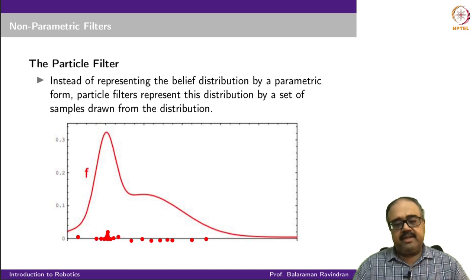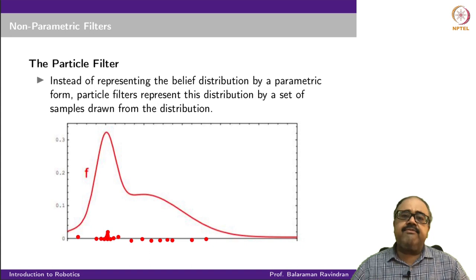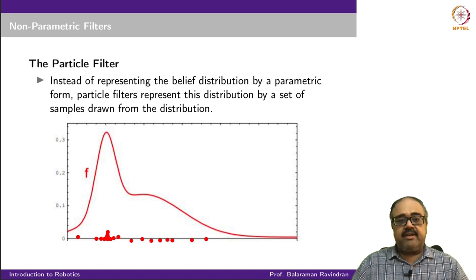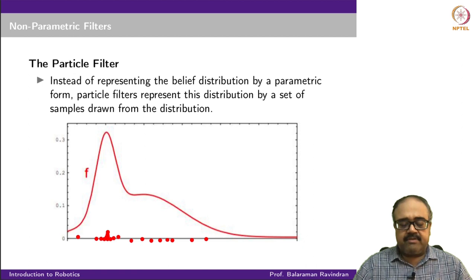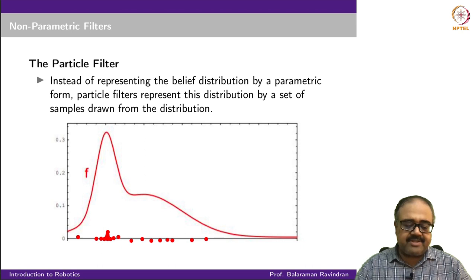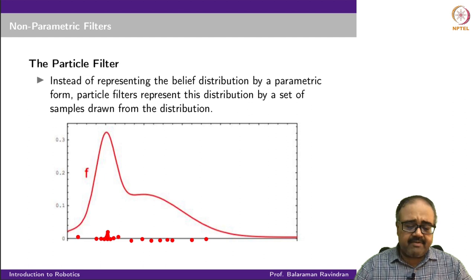In the particle filter, instead of representing the belief distribution as a function, the distribution is represented by a set of samples drawn from it. The curve f describes the distribution, and we represent it by storing a set of samples drawn from that distribution. This distribution is defined on one dimension — the x-axis is the dimension and the y-axis is the density for values of x.